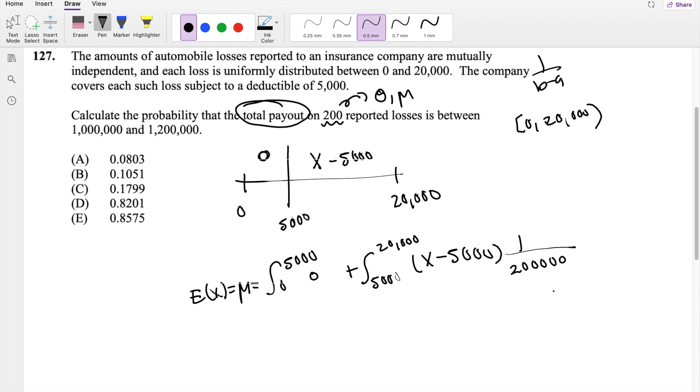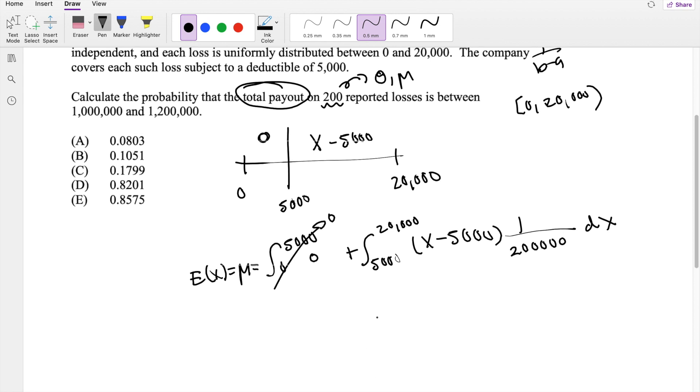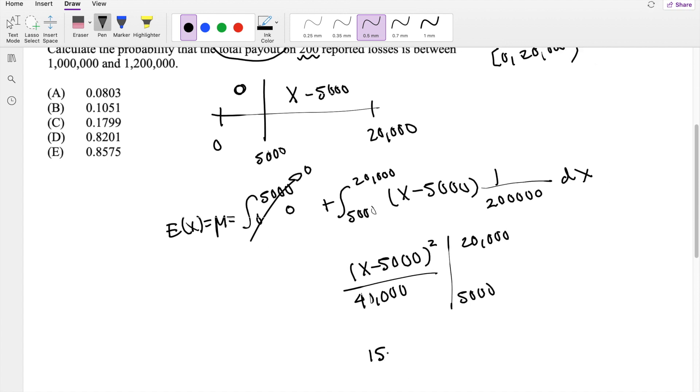It's distributed between 0 and 20,000, so we know the distribution function is 1 over B minus A, which is 1 over 20,000. Integrating this, we know this is just going to be 0. And then this is going to be integrated in terms of X. So that's X minus 5,000 squared divided by 40,000, integrating from 5,000 to 20,000. The upper limit gives you 15,000 squared divided by 40,000. The lower limit gives you 0. So the mean is 5,625.